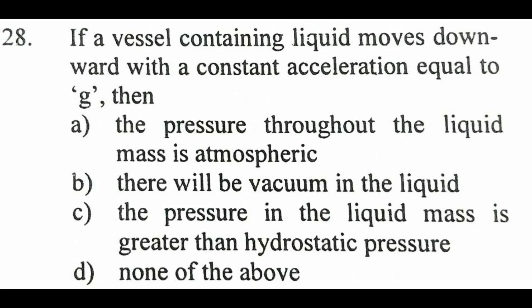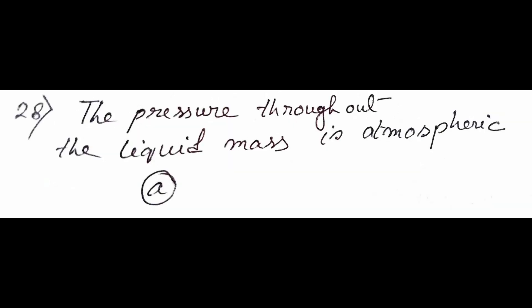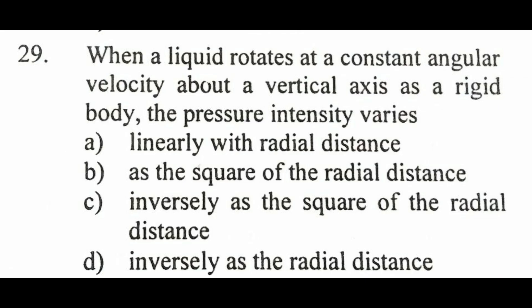When acceleration equals g, the liquid pressure distribution changes. The liquid mass experiences atmospheric pressure plus pressure due to acceleration, so the net downward force due to acceleration affects the pressure. Next question: when the liquid is rotated at a constant angular velocity about a vertical axis, how does pressure vary across the container?